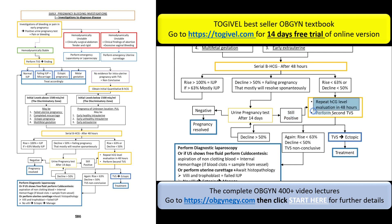If still positive, repeat the hCG after another 48 hours or perform another TVS. If the rise is less than 63% or the decline is less than 50%, you cannot be sure it is intrauterine and cannot conclude it is a failing pregnancy. In that case, repeat the hCG after another 48 hours or perform a second TVS.